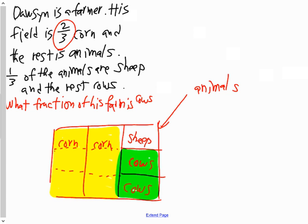What fraction of his farm is cows? Now, strictly from a picture standpoint, how many parts is that field cut into now with those dotted lines included? Nine parts. And of those nine parts of his farmer's field, how many are cows? Two.